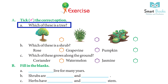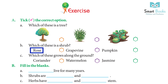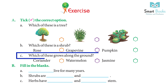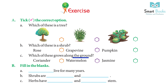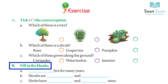Exercise A — tick the correct option. Question A: which of these is a tree? Answer: picture one. Question B: which of these is a shrub — rose, grapevine, or pumpkin? Answer: rose. Question C: which of these grows along the ground — coriander, watermelon, or jasmine? Answer: watermelon.